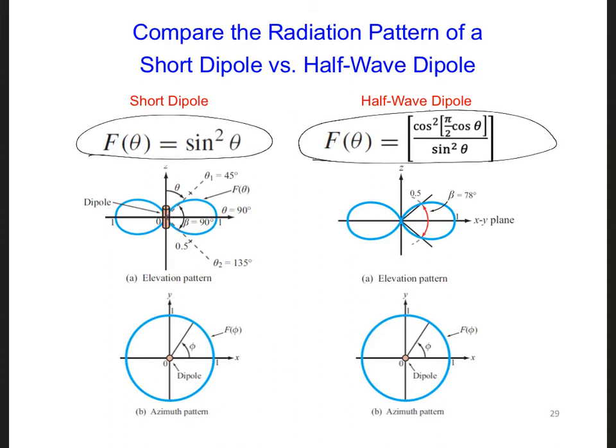Plotting these two functions, we can see that the azimuthal patterns are identical. This makes sense because both antennas are identical and symmetrical in the azimuthal direction. But look at the elevation patterns. The half-wave dipole is just a tiny bit narrower.